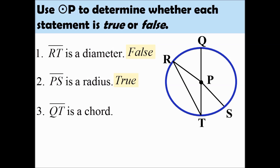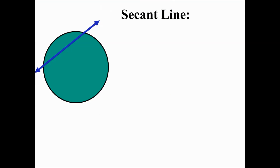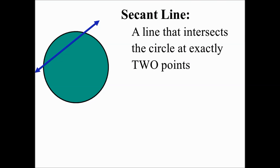Number 3: Line segment QT is a chord. Line segment QT goes from one end point on the circle to another end point on the circle. Therefore, it is a chord. It is also the diameter. A secant line is a line that intersects a circle at exactly 2 points. The difference between a secant line and a chord is that the secant line is a line, whereas a chord is a line segment.